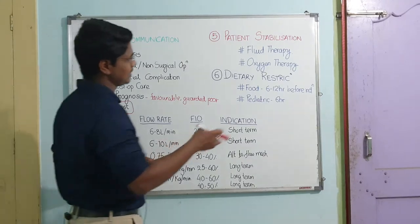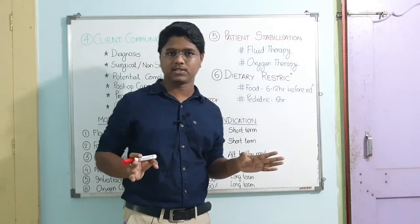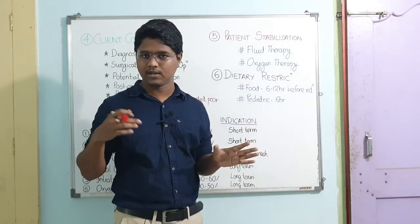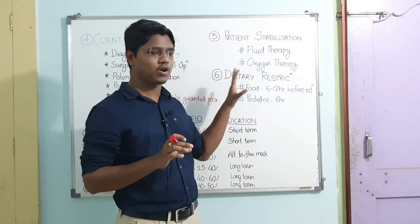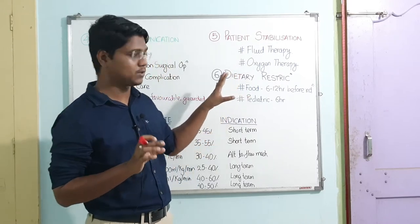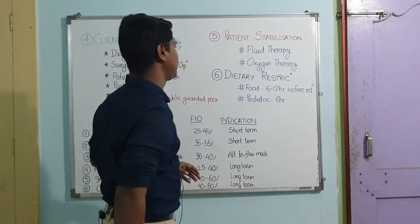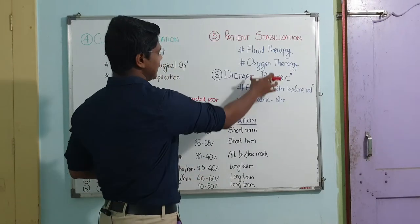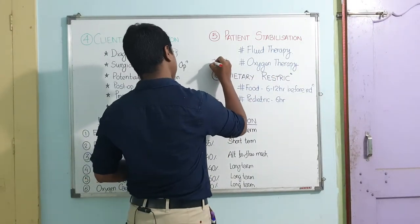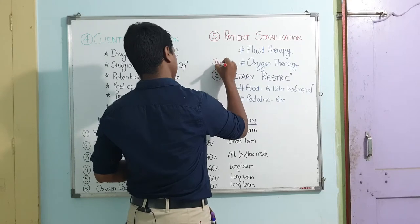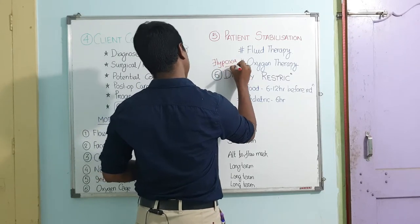Next is patient stabilization. Fluid therapy — I have already discussed this in detail; go through the BSR playlist where I have given the shock pathophysiology and fluid therapy. Next is oxygen therapy. If the patient develops hypoxia, you have to give oxygen therapy.